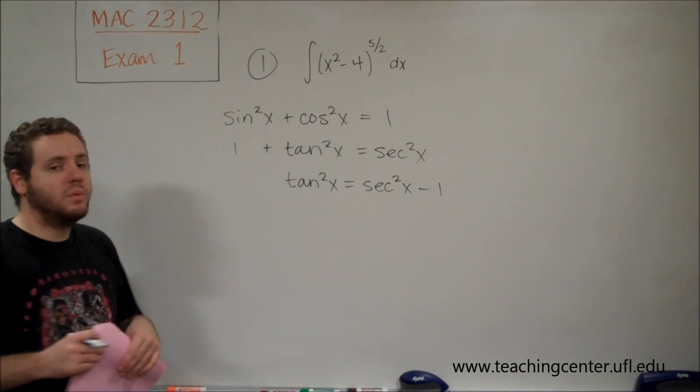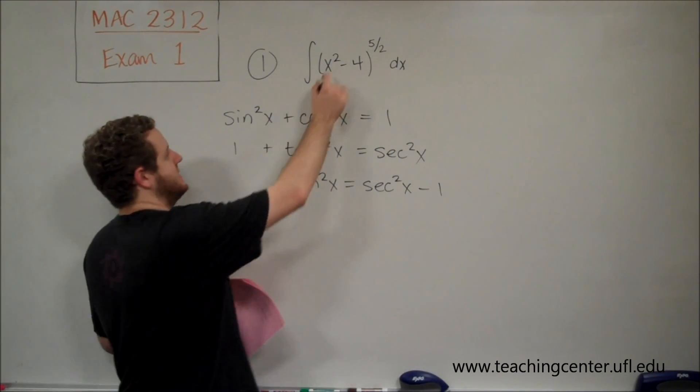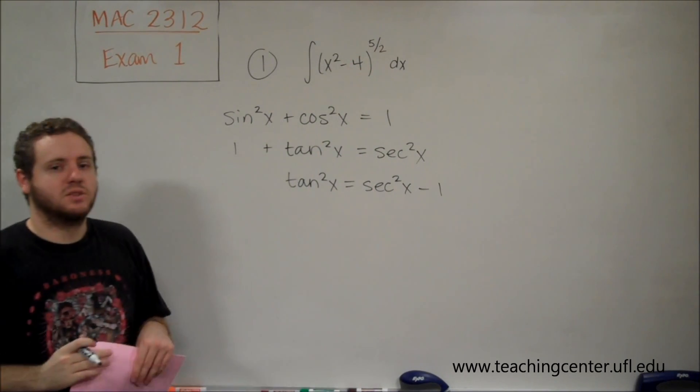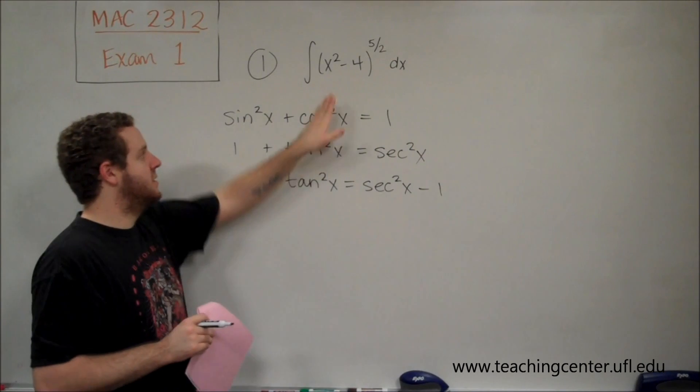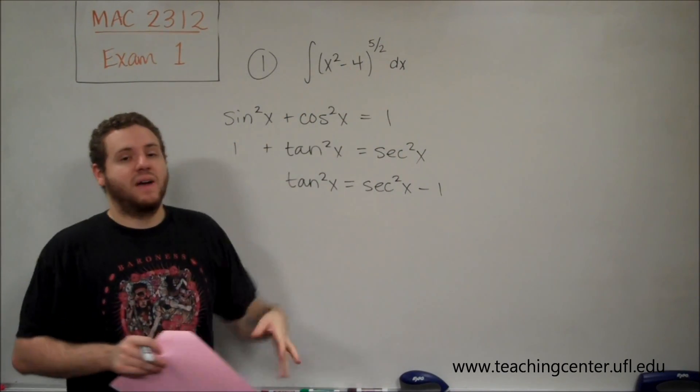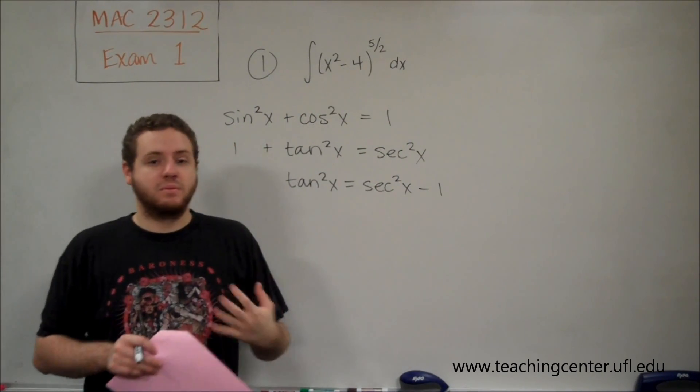So we're almost done and we can't just say x is secant though because we have a 4 here. So we have to think, we would want the 4 to still be a coefficient of the trig function. That way we could factor the 4 out and then we would just have the trig function.